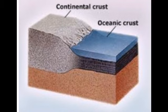The oceanic crust is the second sub-layer of the crust. This layer is made up of silica and magnesium, and is approximately 7 to 10 kilometers thick. Basalt and gabbro rocks are mainly found in this layer.